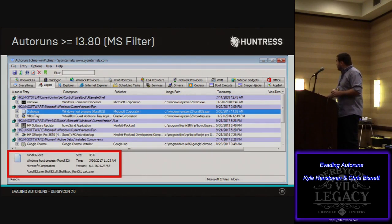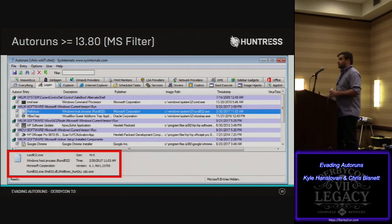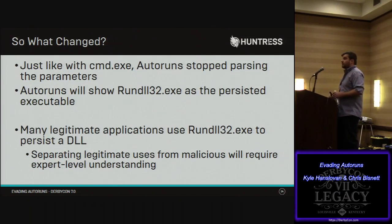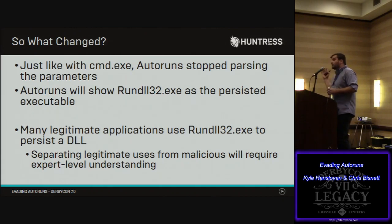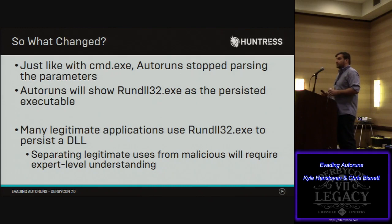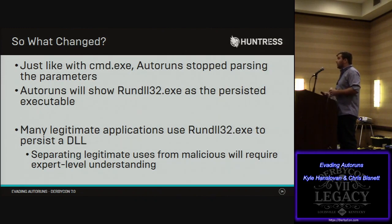In the new version of Autoruns, even with the MS filter on, rundll32 still shows up because it stopped parsing the rundll32 arguments — now it just exposes rundll32 directly. Just like with cmd.exe, they stopped parsing the arguments for rundll32. It's unclear whether they stopped parsing altogether or just for a limited subset like cmd.exe and rundll32. The problem is that many legitimate applications actually use rundll32 to persist — like printer drivers and tray icons. Because of this, you'll now need expert-level understanding to figure out where execution is going and whether it's legitimate or malicious.